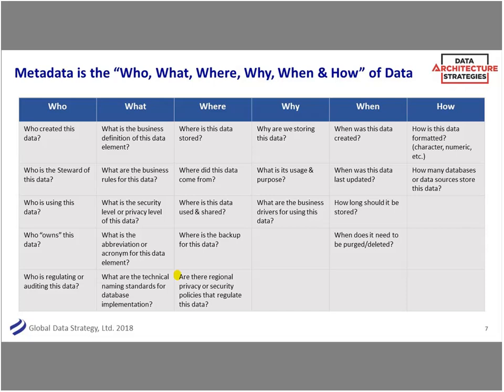The 'why' asks: why are we storing this data anyway? For governance and data quality, what is this data meant to be used for — so we don't use it incorrectly. 'When' covers when it was created, when it was last updated, is it the freshest version. And 'how' covers how it's defined, how it's formatted, how many databases. It really is that full spectrum of what is the context around my information.